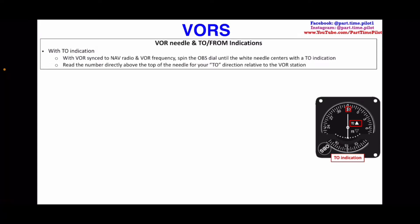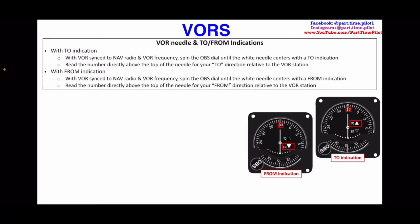The number up top on the compass rose of your VOR face gives you the TO radial. For a FROM indication, with our VOR synced to our nav radio and VOR frequency, we spin the OBS dial until the white needle centers with the FROM — the white triangle on the FROM indication. Then we read the number directly above the top of the needle, which gives your FROM direction relative to the VOR.